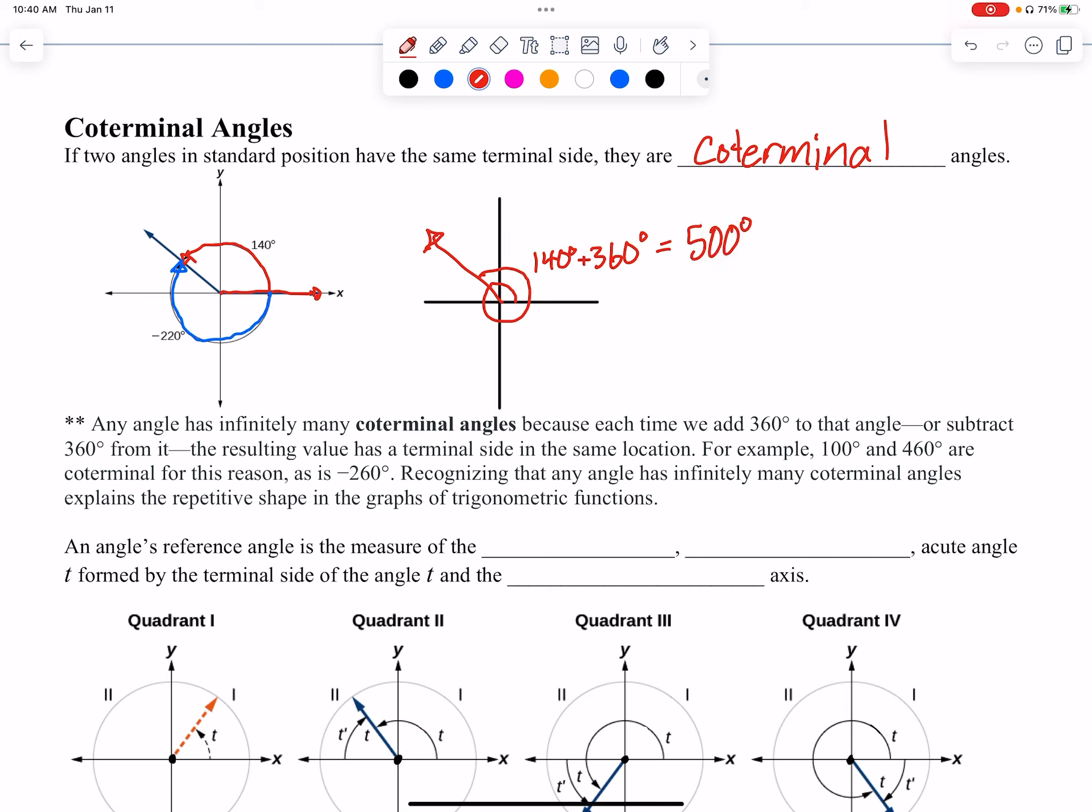And then I could, if I wanted to get another coterminal, I could just say, hey, I want to go all the way around again, and I know that those are going to be the same. This is going to be a coterminal angle with 860°. I just added another 360°.